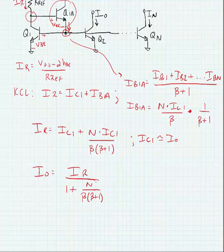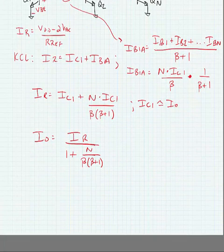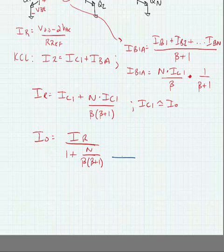What we've effectively done with this transistor is to make beta larger, and that's why they call this configuration a beta helper.